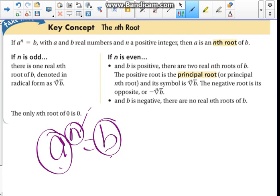If this n is an odd number, an odd power, then it has only one real root, one answer. If this is an even number, then it's going to have two roots, one being positive, one being negative. We call the positive one the principal root, and the negative is just the opposite of that.